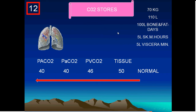The carbon dioxide stores in the body are very large. In a 70 kg person, about 110 liters of CO₂ are present — 100 liters in bone and fat, which provides stability. About five liters are present in skeletal muscles, which takes hours to reach steady state on a ventilator, and five liters in the blood, which takes only minutes to reach steady state.